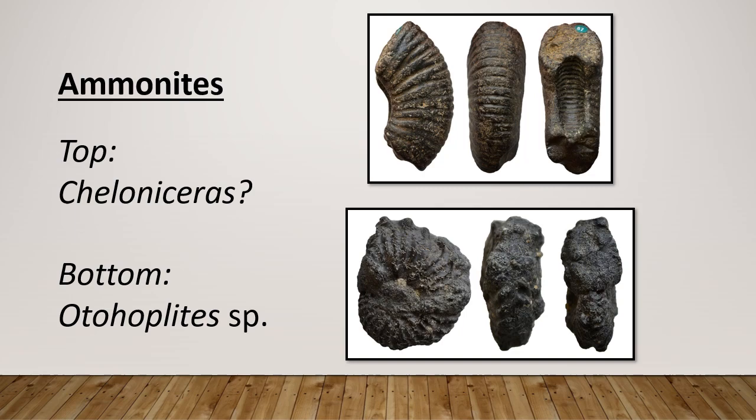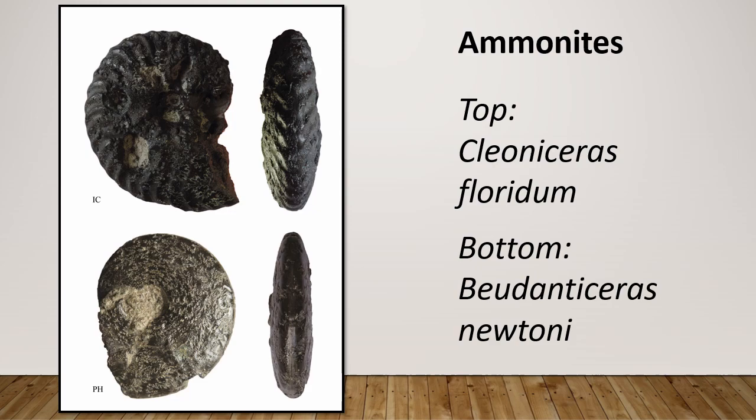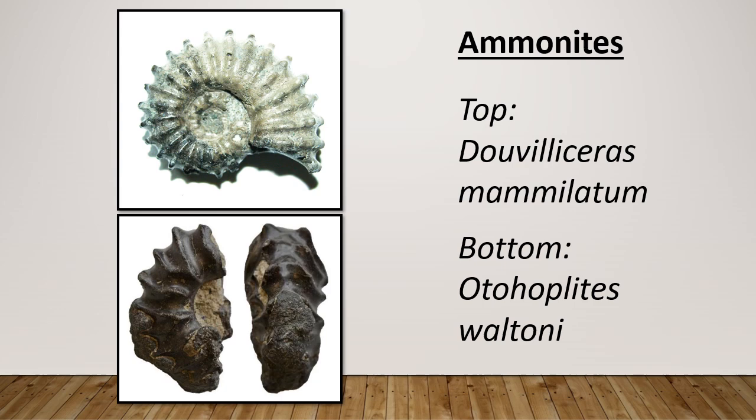And of course we have lots of different kinds of ammonites. One ammonite on the bottom here is called Otohoplites waltoni, which is actually named after one of the previous curators at Folkestone Museum, John Walton, who was curator there back in the 1920s.